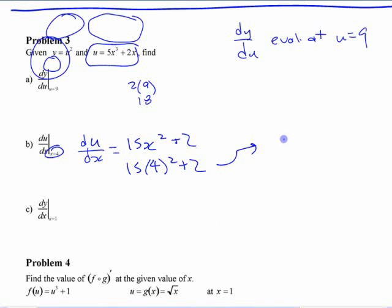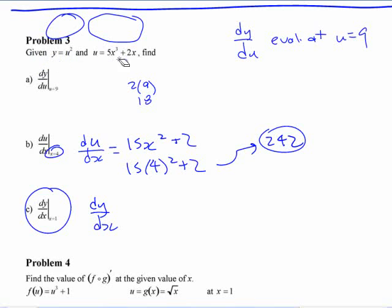Which is what here? 242 or something like that. If you want this one, if you want dy dx, and you have only two functions given separately like this, like these are not combined together, you have two choices here.